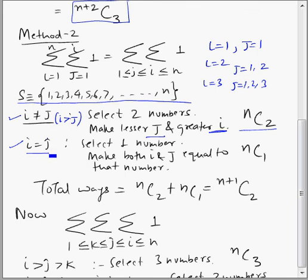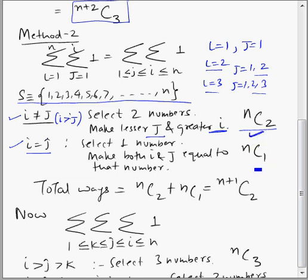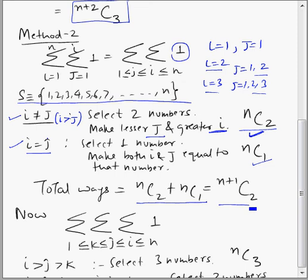For the other case, when i and j take equal values — like (1,1), (2,2), (3,3) — we select one number from the set and set both i and j equal to it, giving nC1 ways. So in total, i and j can be set in nC2 + nC1 ways, and every such setting contributes one count. Therefore, the answer for double sigma is n+1C2.